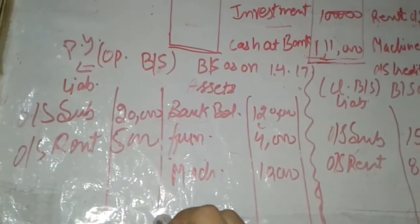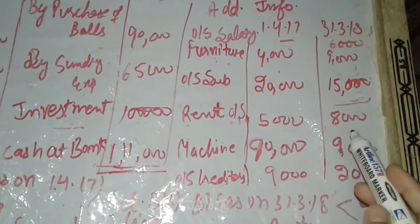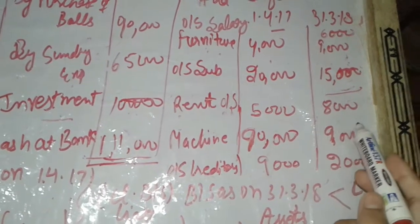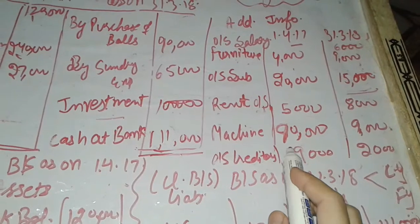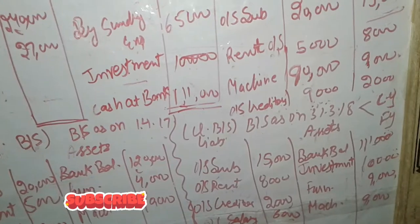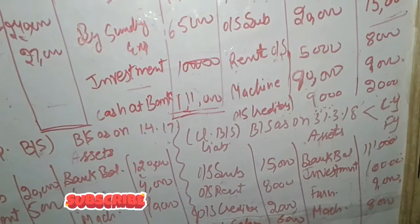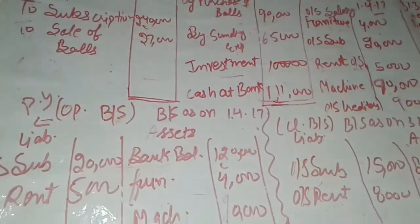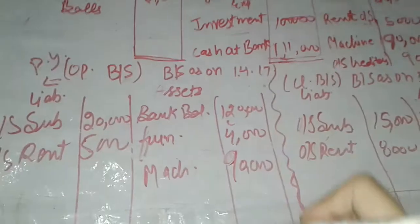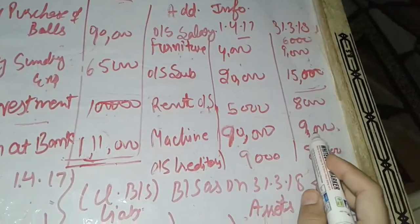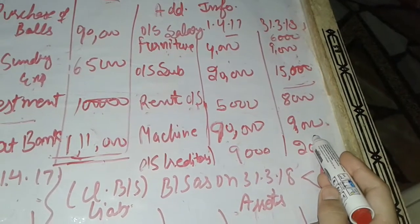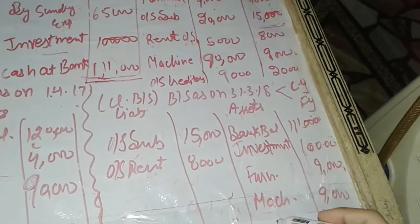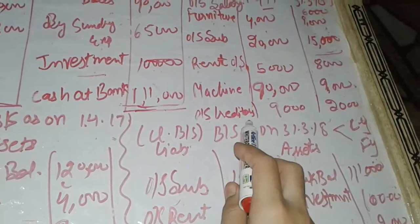Outstanding rent as on 1st April 2017 means that in 2017, rent of Rs. 5,000 was outstanding. This belongs to the previous year and is written in the opening balance sheet. Outstanding rent as on 31st March 2018 belongs to the current year and is posted in the closing balance sheet as Rs. 8,000. The opening balance of machinery is Rs. 90,000, belonging to 2017, posted in the opening balance sheet. The machinery as on 31st March 2018 is Rs. 9,000 and is posted in the closing balance sheet.